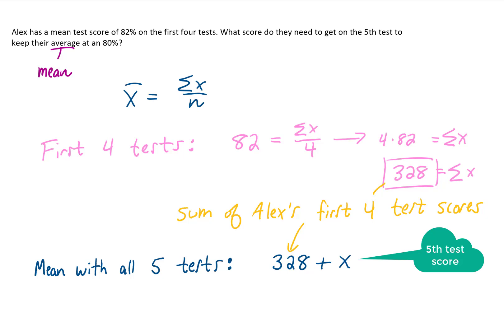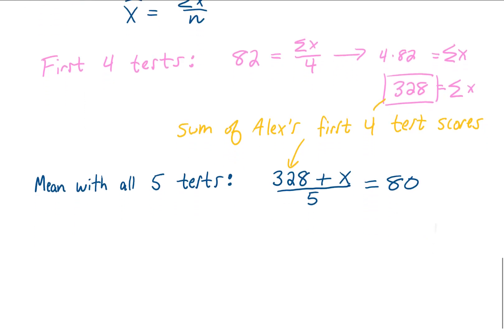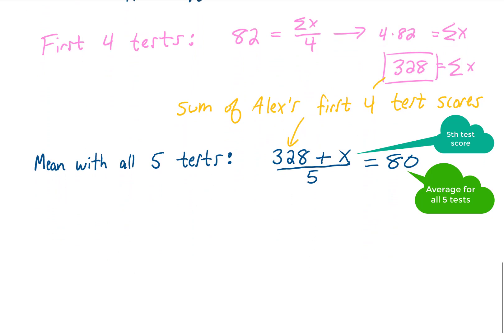To find Alex's mean, we divide that total by the 5 test scores, and we know that Alex wants to keep an average of 80%. To complete this problem, we need to solve for x.